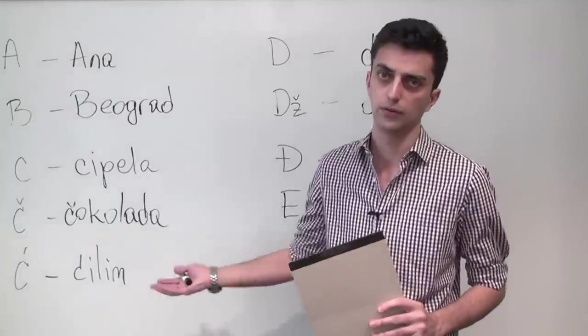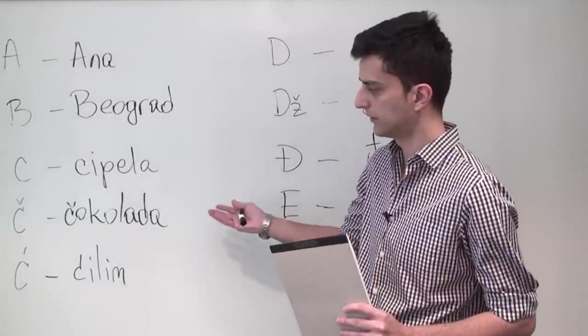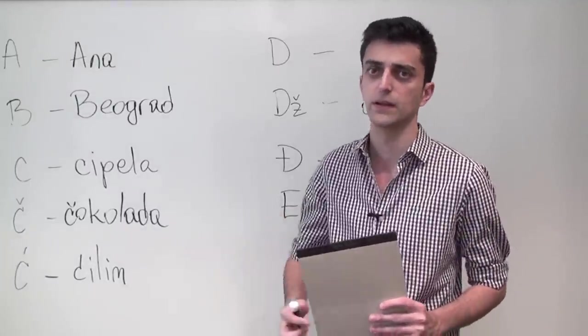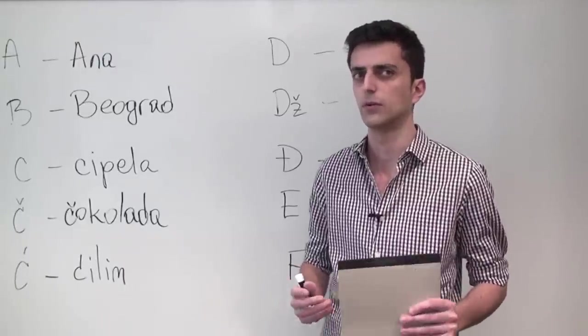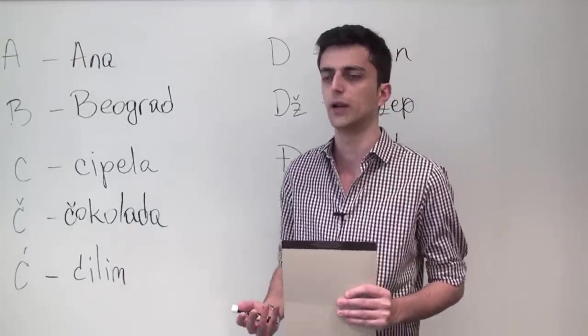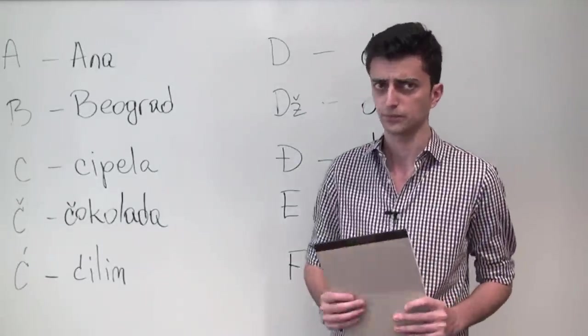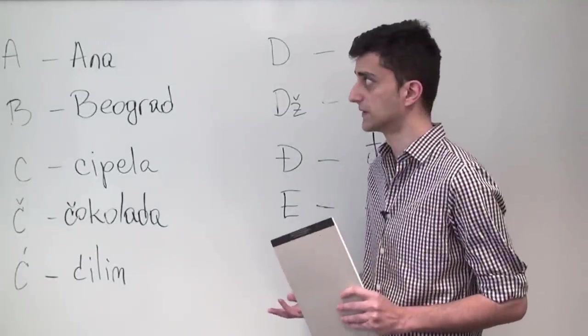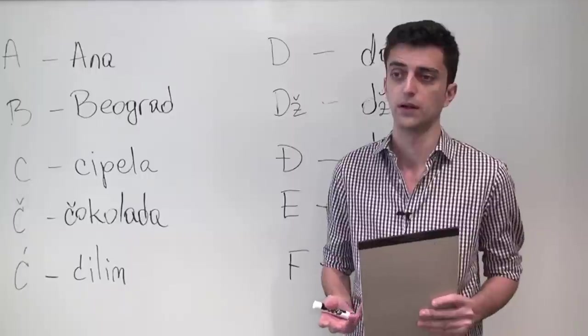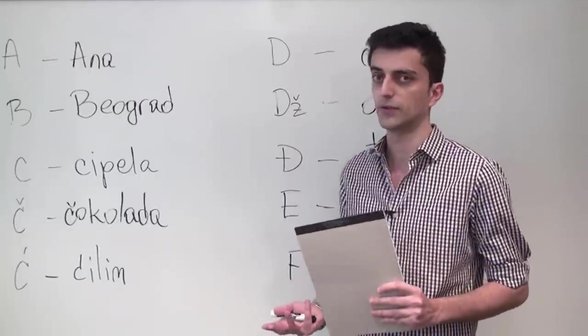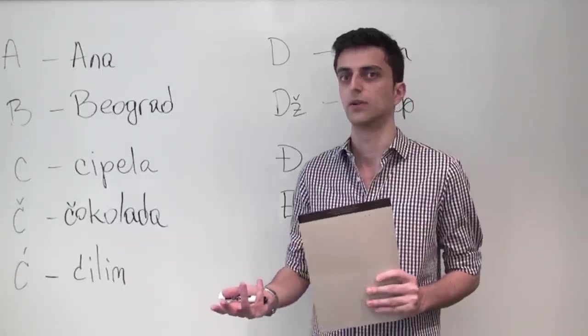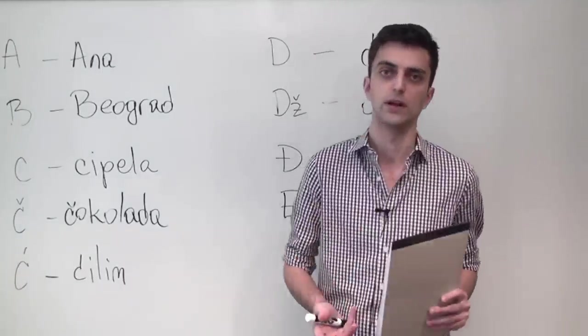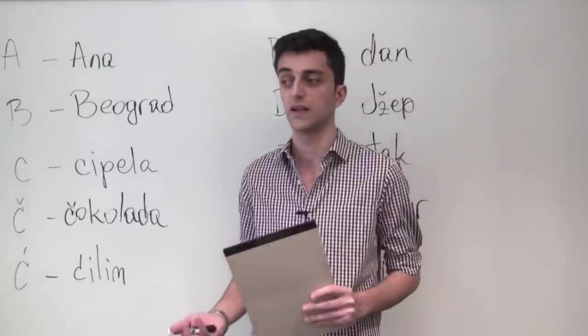Before I begin going through the letters and the specific examples in BCS, I'd like to say a few things you should probably know by now about the BCS alphabet. First thing is that it has 30 letters that correspond to 30 different sounds. Each letter represents a sound and each sound can be written down as a single letter, meaning that this alphabet is phonetic.